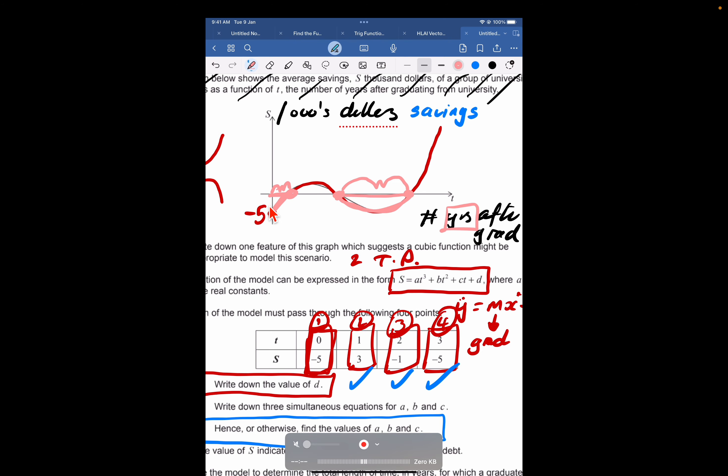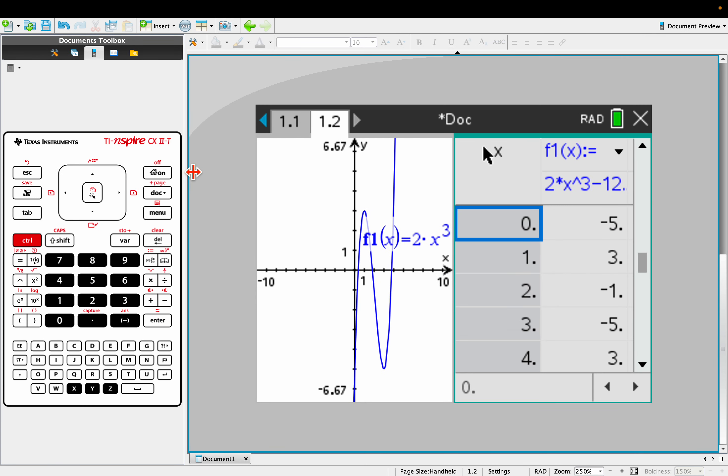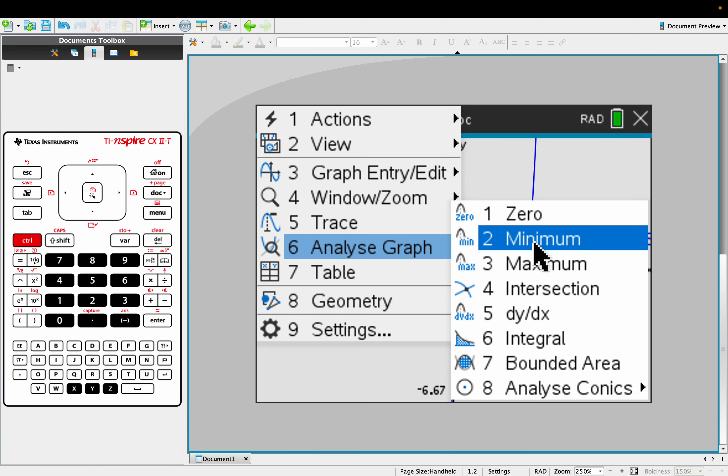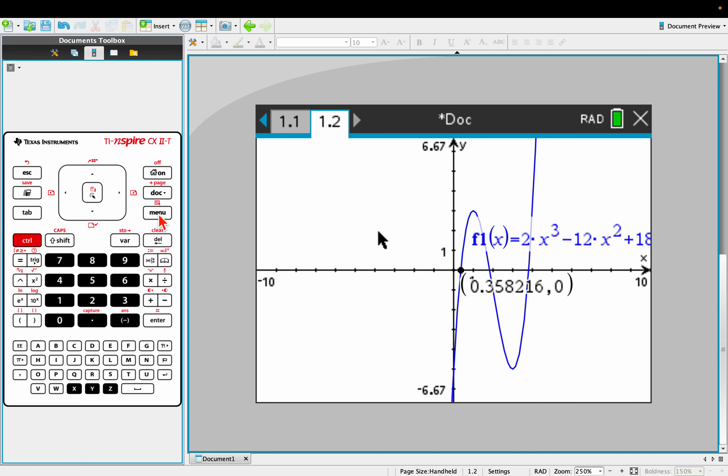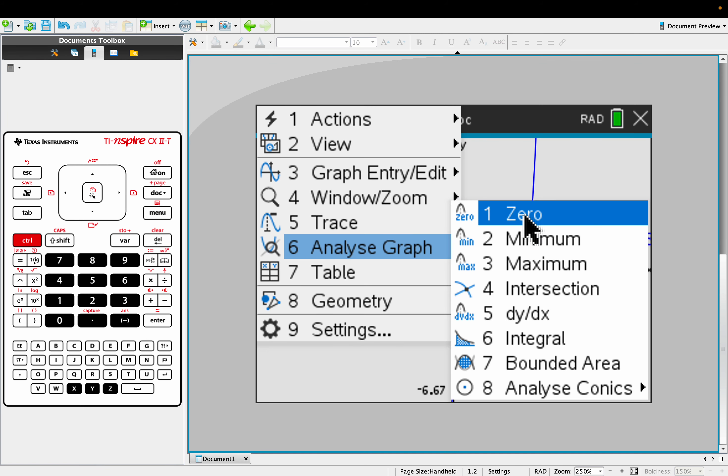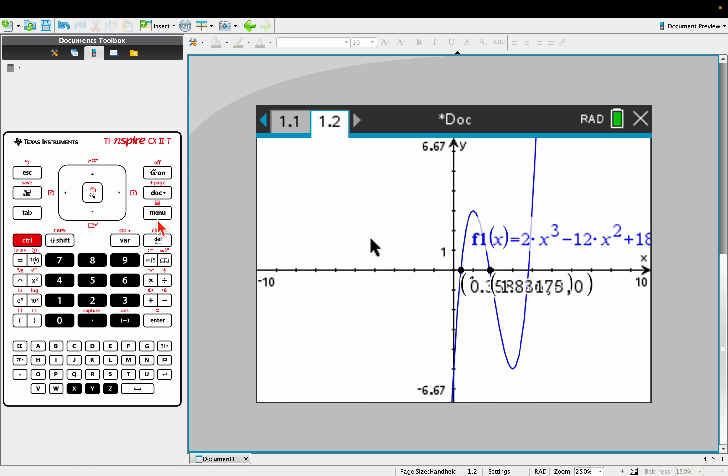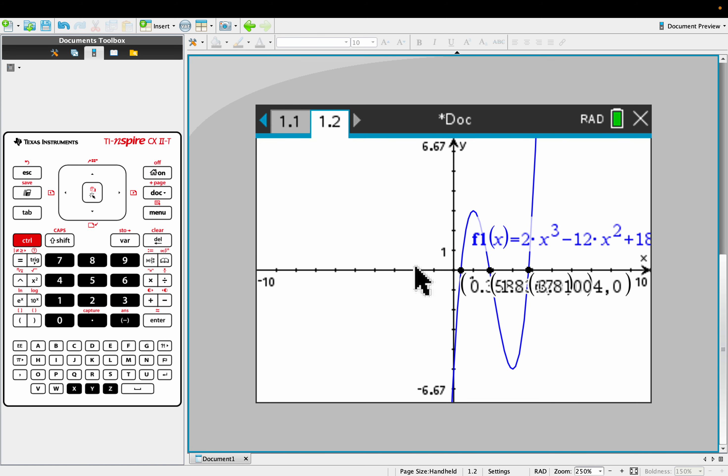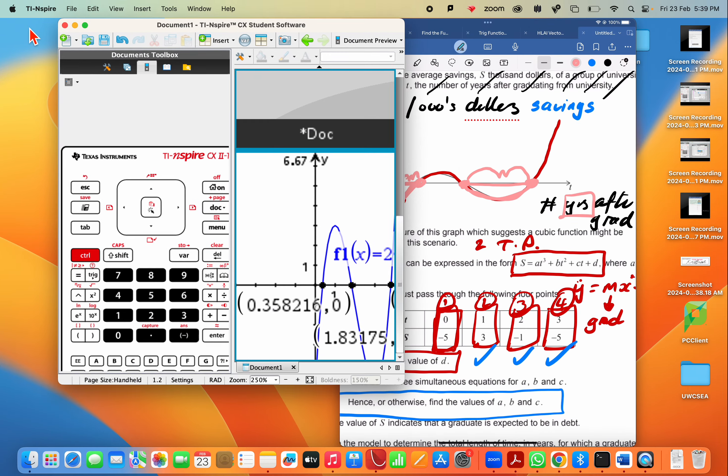Basically we're going to find this length of time, because this is the number of years. That clearly coincides with the zeros of the function. We go back to our TI Inspire, menu, Analyze, Zeros, click-click. Menu, Analyze, Zeros, click-click, and Menu, Analyze, Zeros, click-click, and then go and grab the zeros. You've got 0.358, 3 sig fig, 1.83, and 3.81.